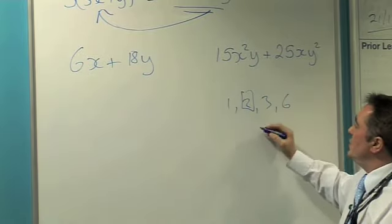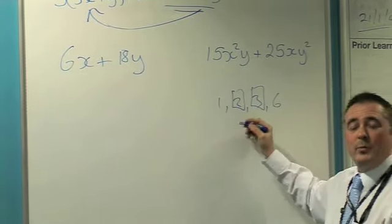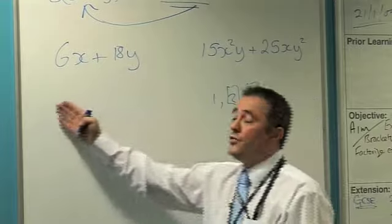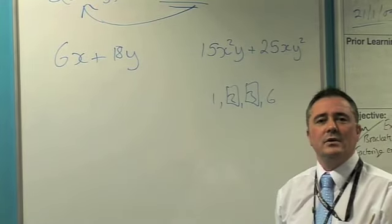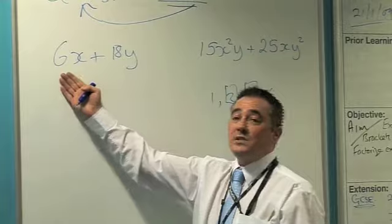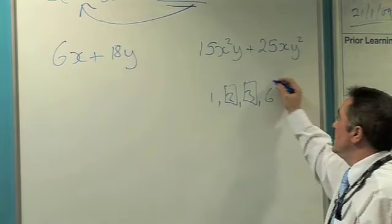They seem to think that 2 will do or 3 will do. But it's not factorised fully if I put 2 or 3 outside my bracket. It's got to be your highest common factor. And my highest common factor of 6 and 18 is 6.